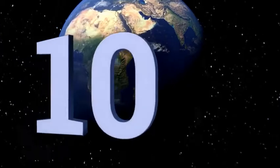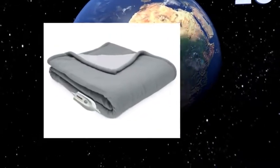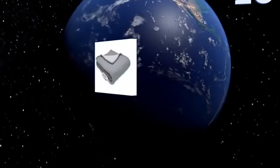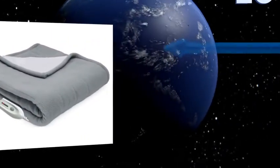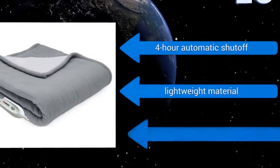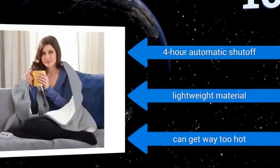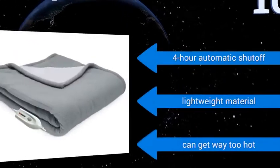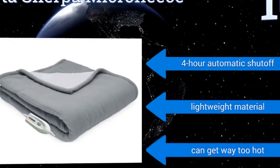Starting off our list at number 10, the Serta Sherpa Microflace is reversible with ultra-soft 100% polyester brushed microflace on one side and a thick Sherpa lining on the other. It does a great job of keeping you warm when lounging on the couch with its four heat settings. It features a four-hour automatic shut-off and a lightweight material. However, it can get way too hot.